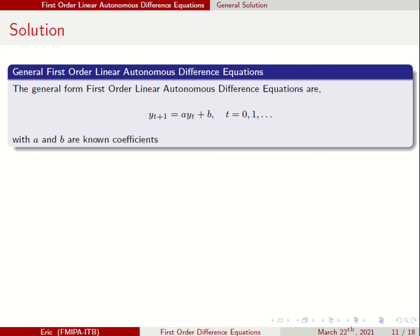Welcome back to Business Mathematics 2, MA1203. We are still going to talk about the first order, linear, autonomous, difference equation.